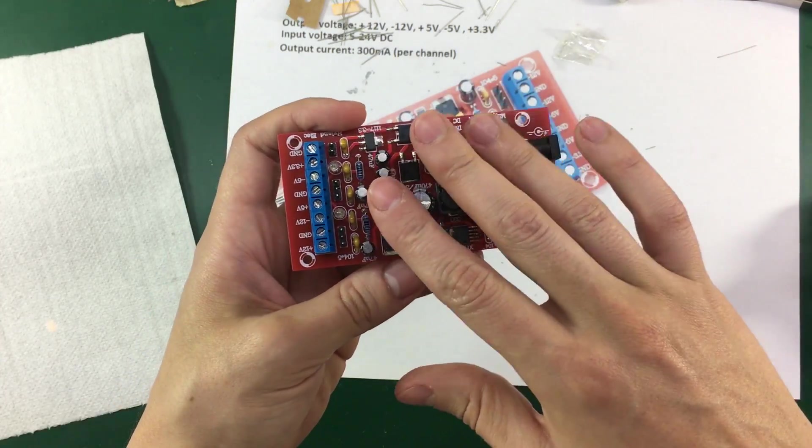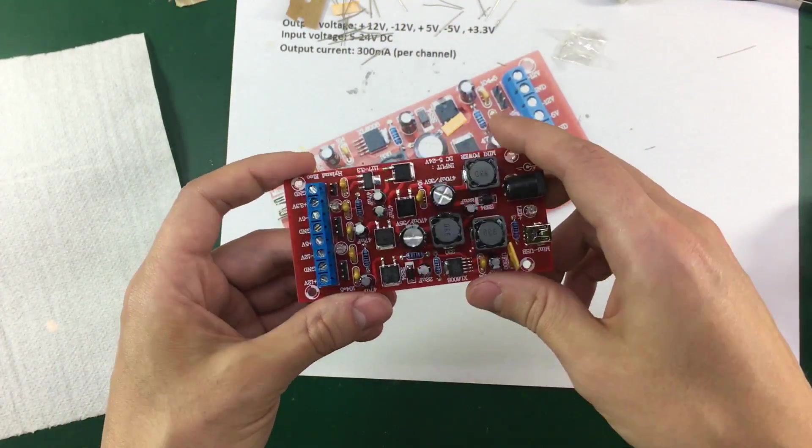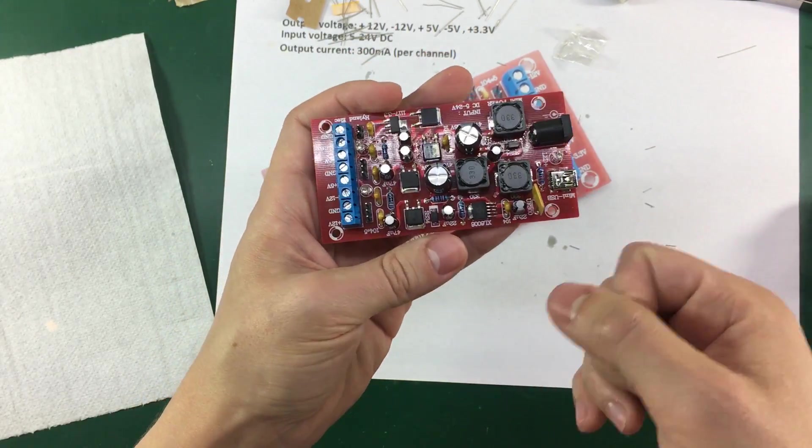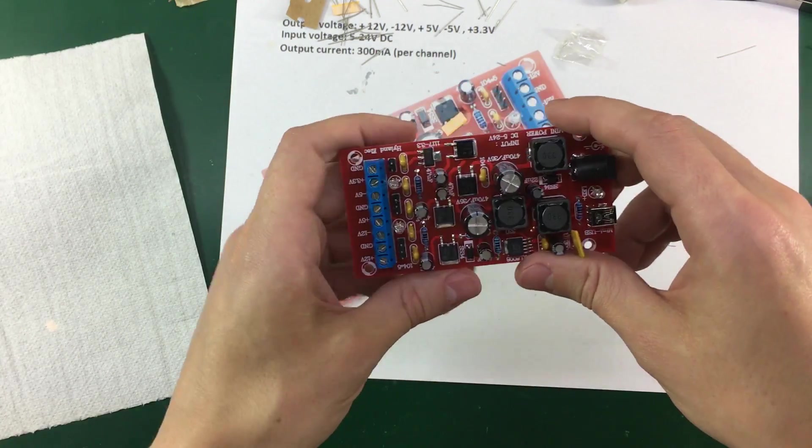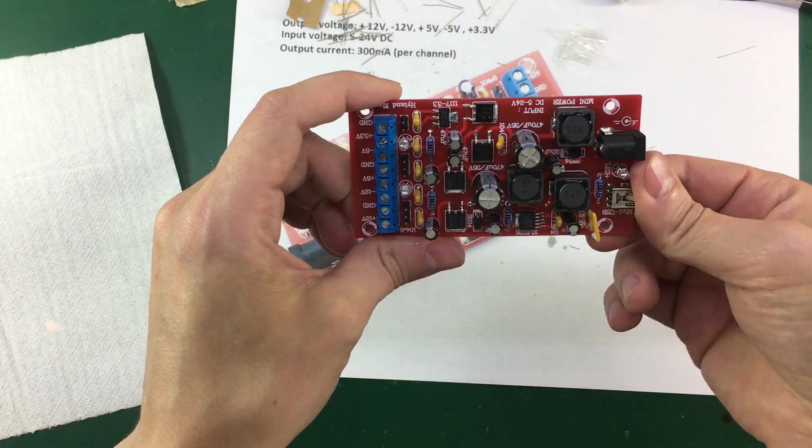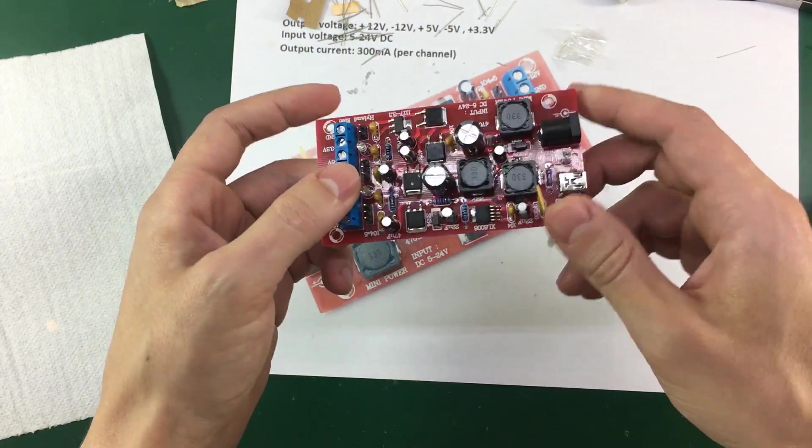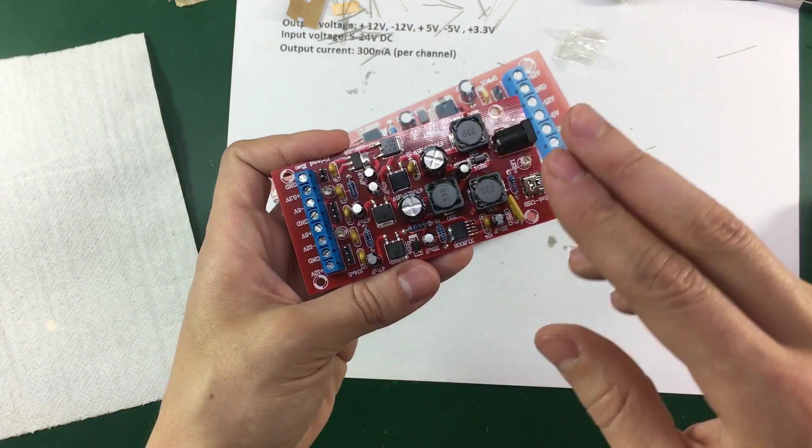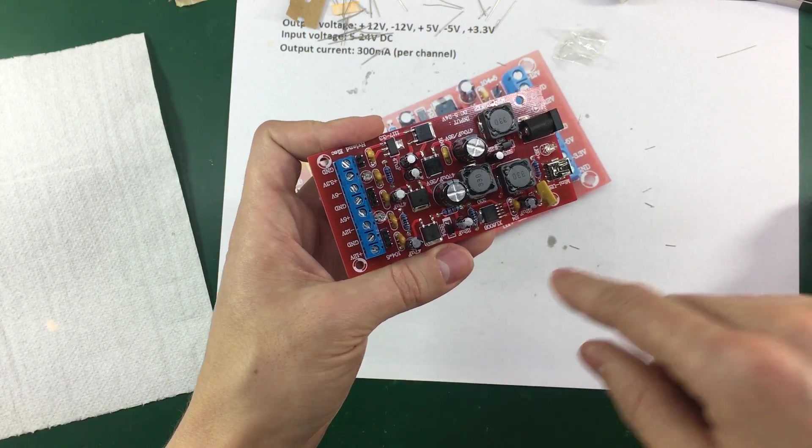So right now I just have to leave this board to dry because there is still water left under the components. It would be nice if I would have an air compressor. I can just blow some air and all of the water will evaporate very quickly but I don't have a compressor so I need to leave it to dry naturally for about half an hour and then I'm going to come back and we're going to be testing the outputs of this power supply.